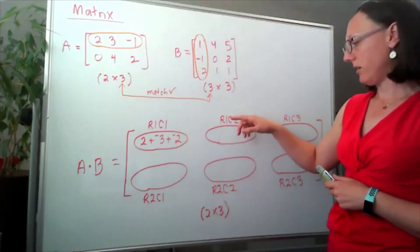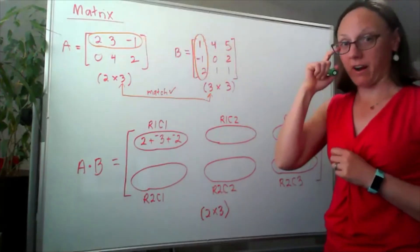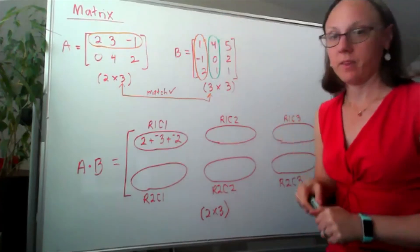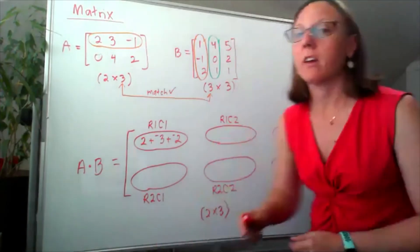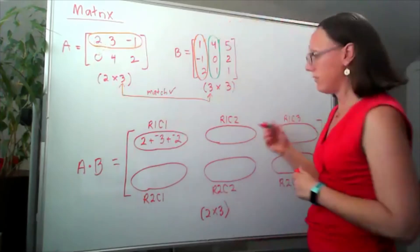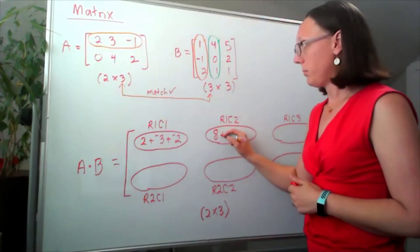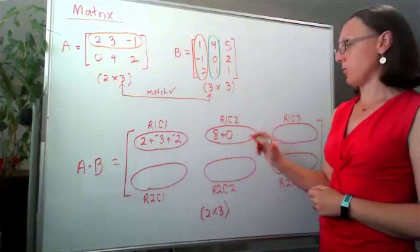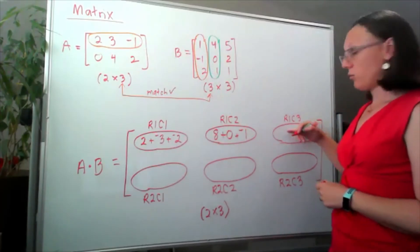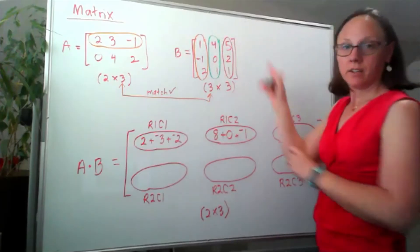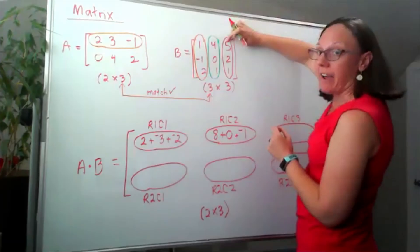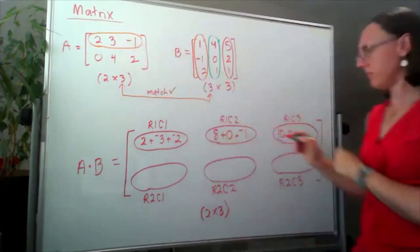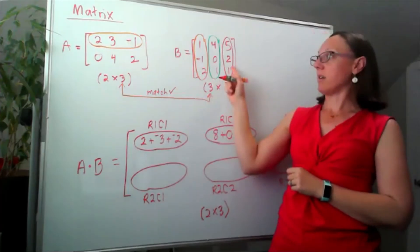To get row 1, column 2, I'm going to take that same row over there, but this time I'm multiplying by column 2. So now my entries are going to look like 2 times 4 plus 3 times 0 plus negative 1 times 1. Row 1, column 3. So here's my column 3. 2 times 5 plus 3 times 2, plus negative 1 times 1.